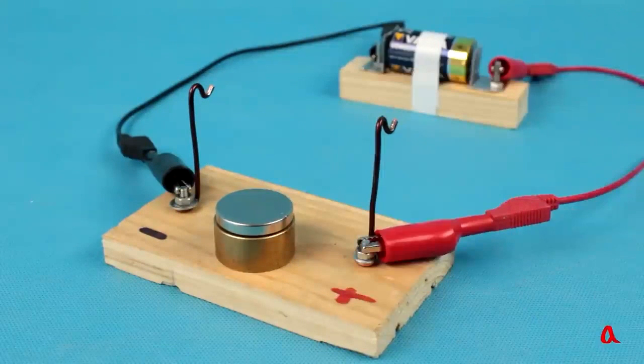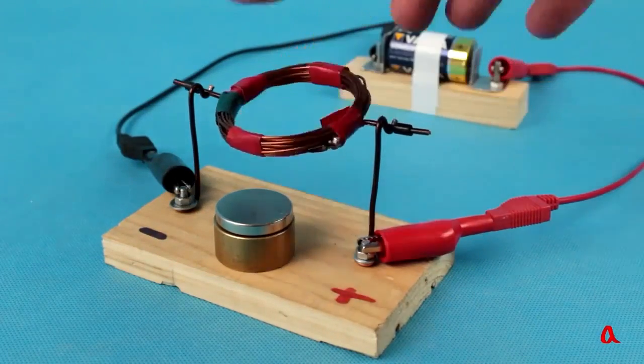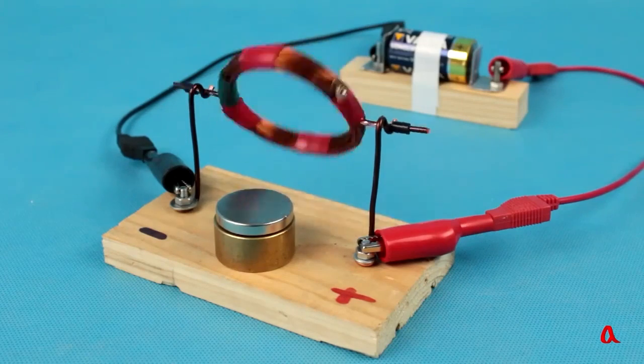The wires leading to the battery are already connected. And now, I carefully place a ring onto the holder positioned on the top. As soon as I do, the magnet starts spinning rapidly, creating a mesmerizing visual effect.